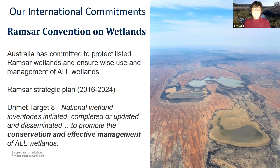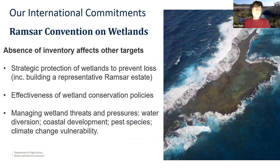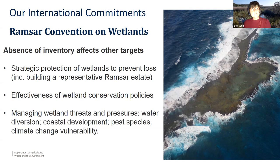So what does that mean? It actually affects all of the things we do in the wetland space. We can't strategically protect wetlands to prevent their loss if we don't actually know their extent. That means we haven't got a representative Ramsar estate at the moment. We can't actually measure how effective our policies are. And most importantly, without that spatial data, we can't get a handle on the magnitude of some of the threats and pressures. We all know about the development going on in river valleys, coastal development, particularly annoying pest species, and the climate change vulnerability aspect.